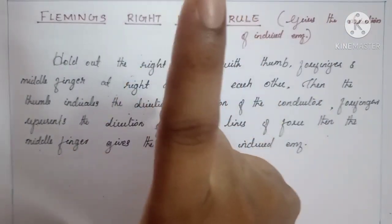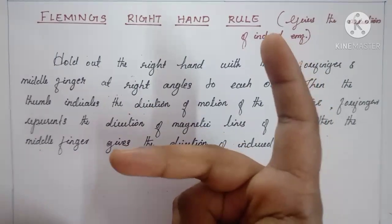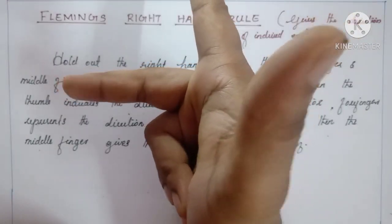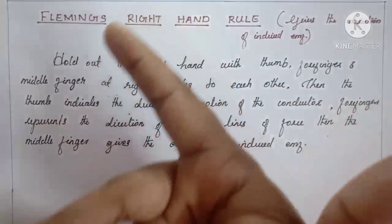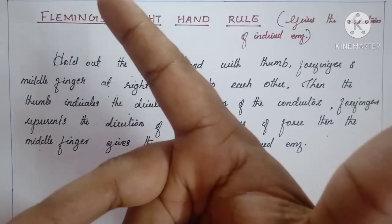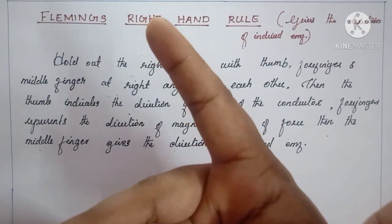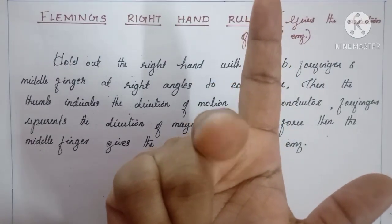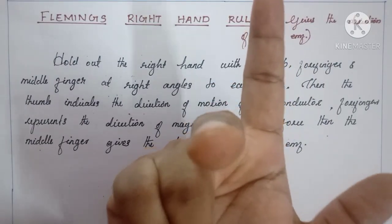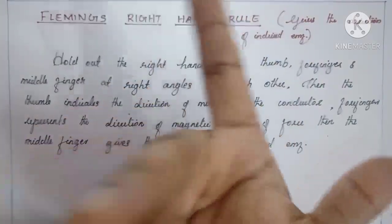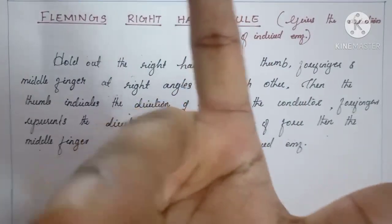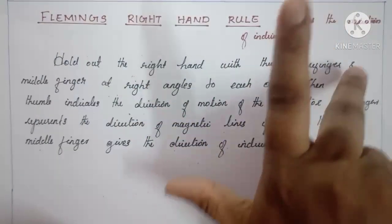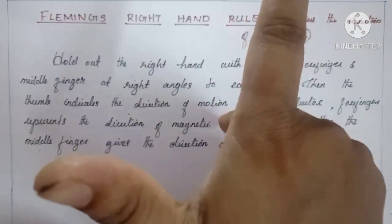In the right hand, the thumb represents the direction of motion of the conductor, the forefinger represents the direction of magnetic lines of force, and the middle finger gives the direction of the induced EMF. The condition is that these three fingers must be at 90 degrees apart from each other.